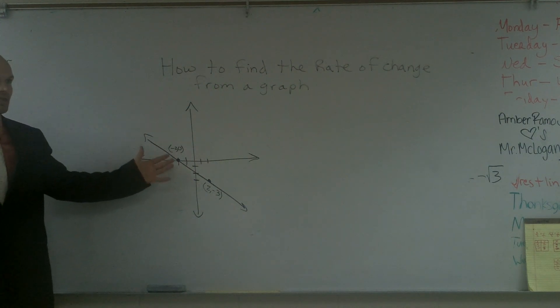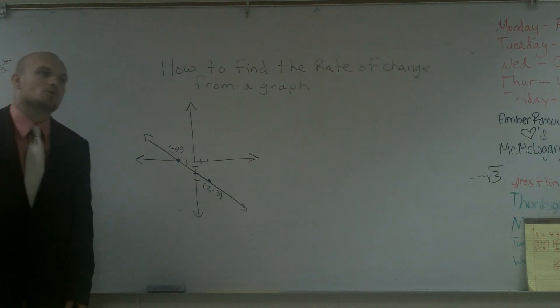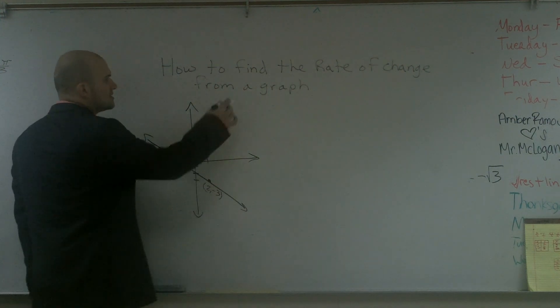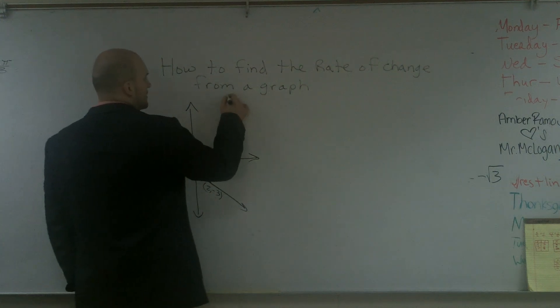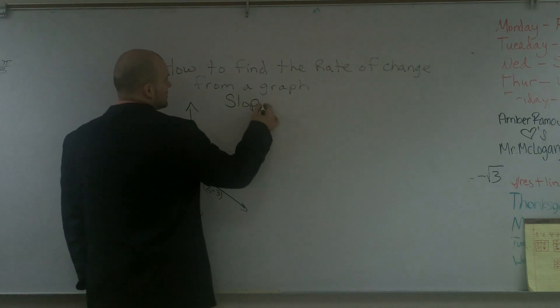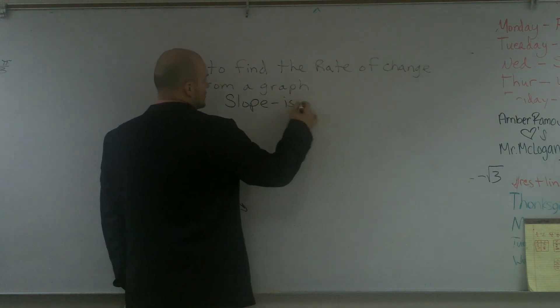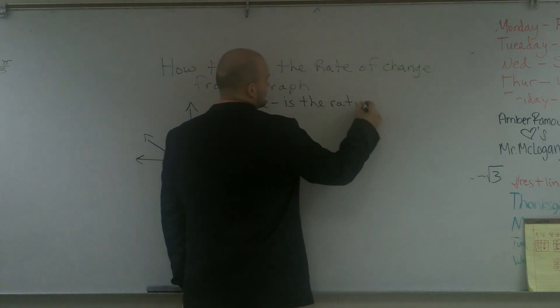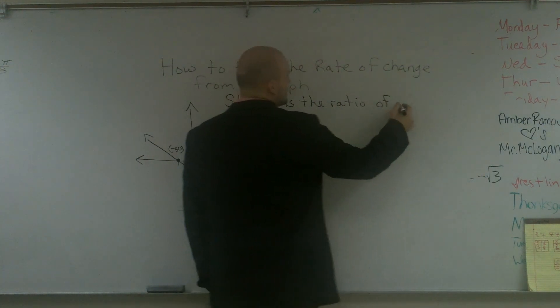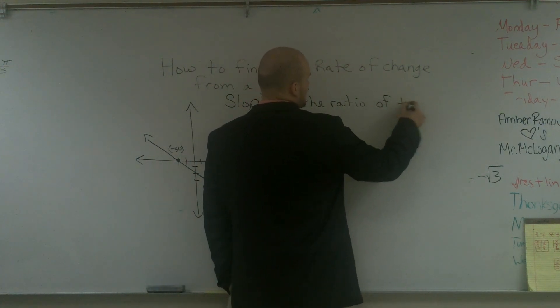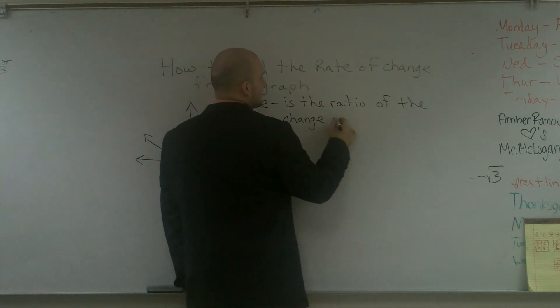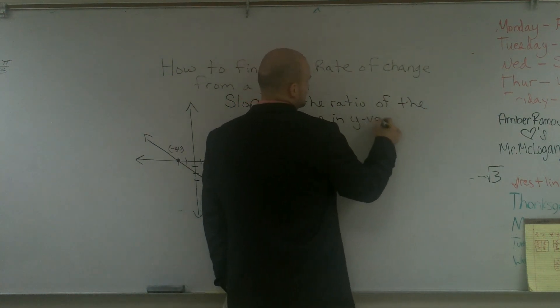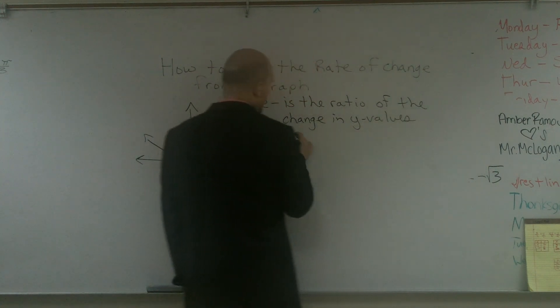When you're dealing with a linear graph, or a table, or between two points, our two quantities are our x and y values. So what we call the rate of change of x and y values is what we call our slope. Slope is the ratio of the change in y values over x values.